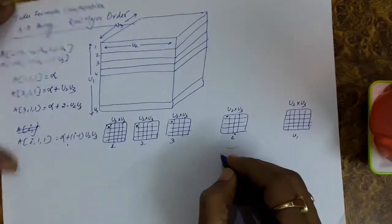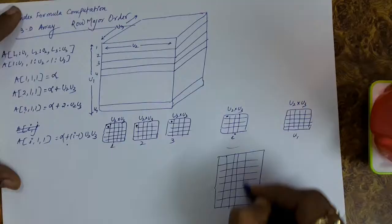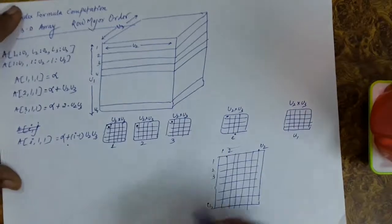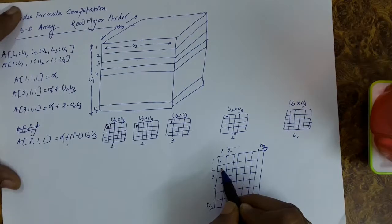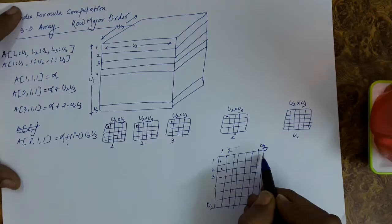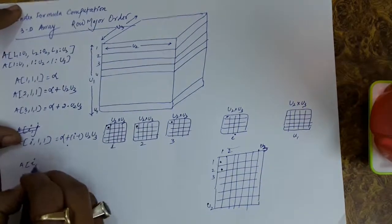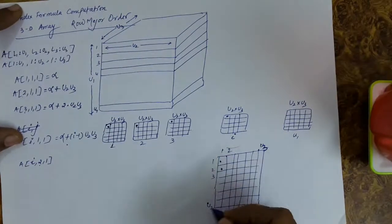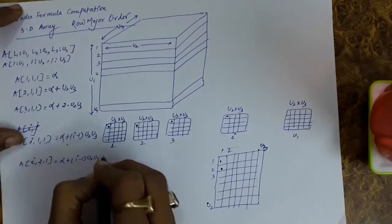Now let us expand this i-th slice. In this 2D array, the row side has size u2, so rows go 1, 2, 3, and so on up to u2, and the column side is u3. We already know the address of the first element of this slice. Moving along the row side, the total number of elements per row is u3. So the address of a[i][2][1] is the address of a[i][1][1] plus u3. Therefore a[i][2][1] = alpha + (i−1)×u2×u3 + u3.